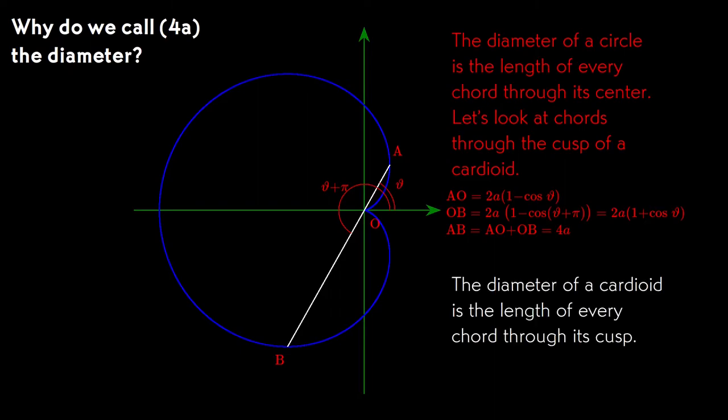Since we said that 4A is the diameter, we can say the length of every chord through the cusp of a cardioid is equal to the diameter, just as the length of every chord through the center of a circle is equal to the diameter.